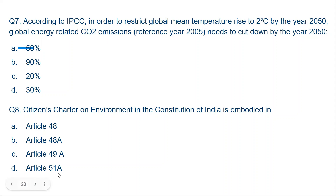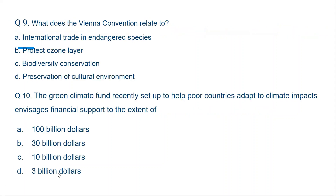Question number 9. What does the Vienna Convention relate to? Options include: international trade in endangered species, protect ozone layer, biodiversity conservation, and preservation of cultural environment. The correct answer is B, protect ozone layer. The Vienna Convention is about protection of the ozone layer.